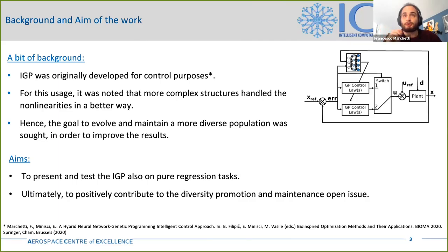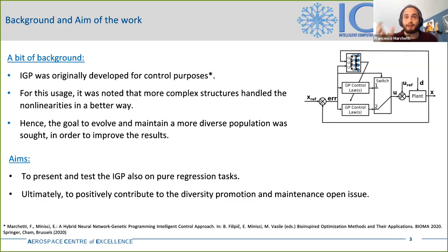The IGP was originally formulated to solve a control problem. In particular, we wanted to find a control law for a space access vehicle. For this kind of problem, it was noted that more complex models — so bigger individuals — led to better solutions, which were able to deal more efficiently with the nonlinearities of the problem. Because of that, we tried to modify the GP so as to maintain and promote the population diversity, to avoid losing bigger individuals due to the bloat control operators, and also to consider them during the evolutionary process, even if they had poor performances.